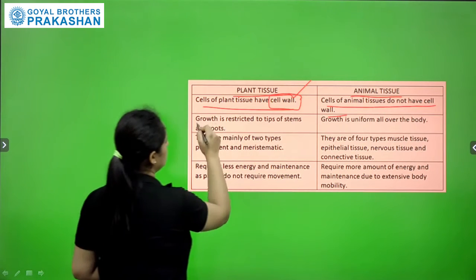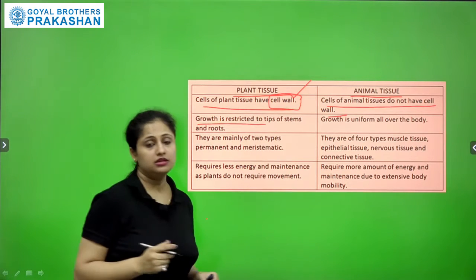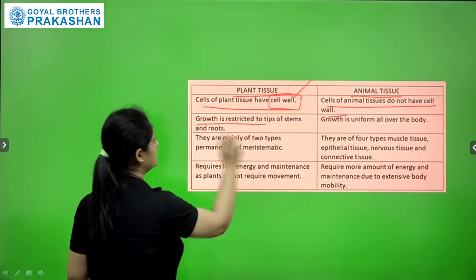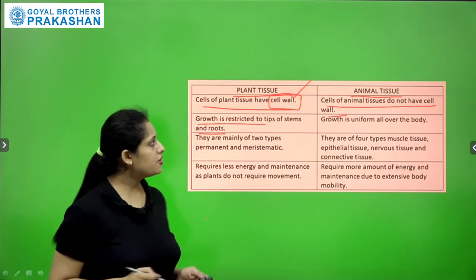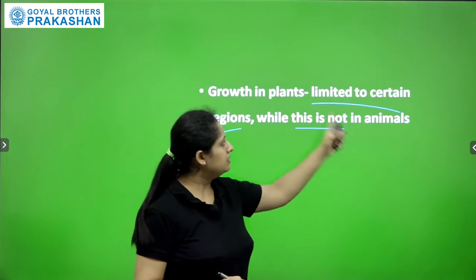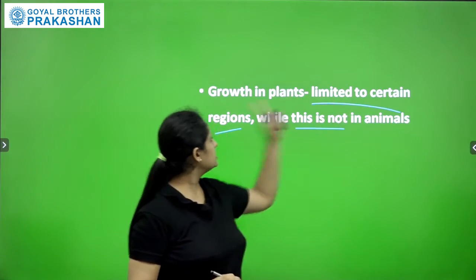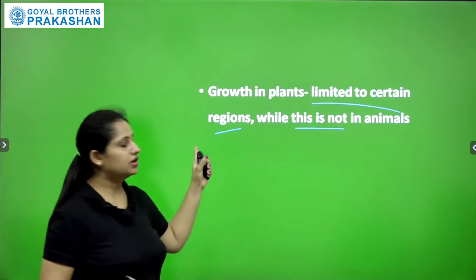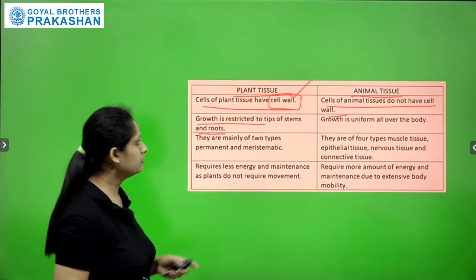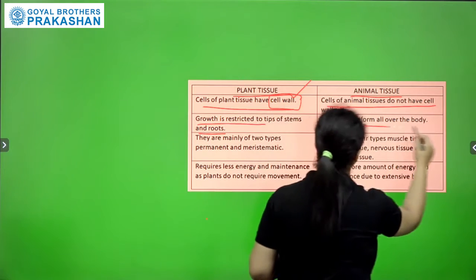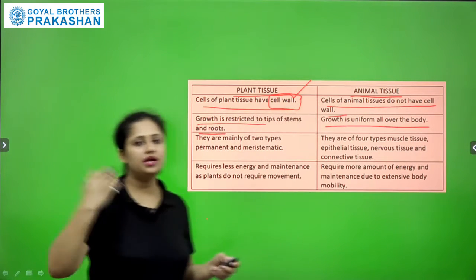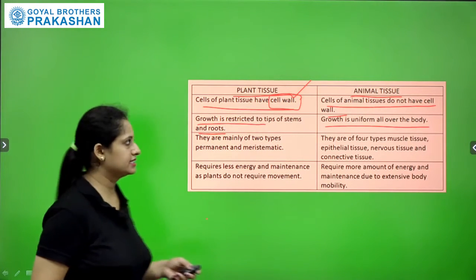In plant tissues, the growth is restricted to the tips of stems and roots. Therefore, in plants, growth is limited to certain regions. In animal tissue, the growth is uniform all over the body, as in our case.